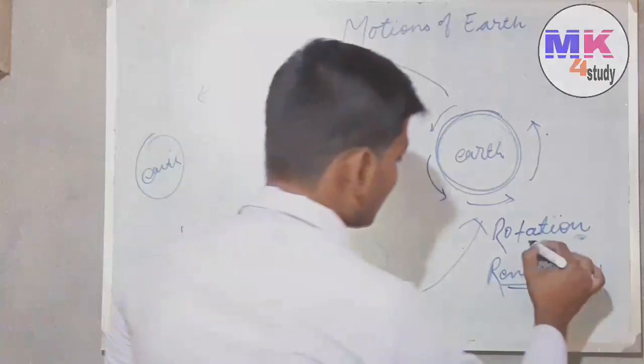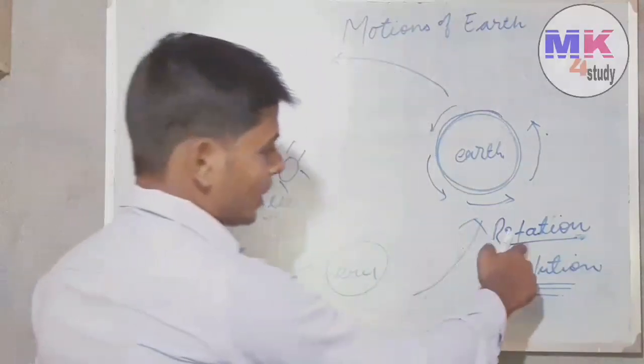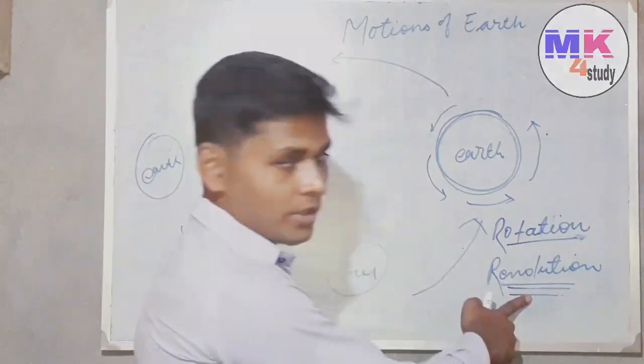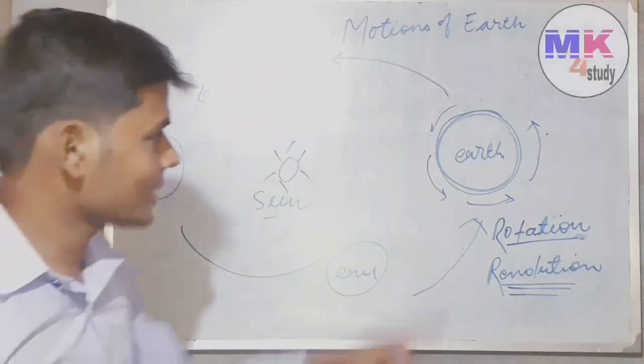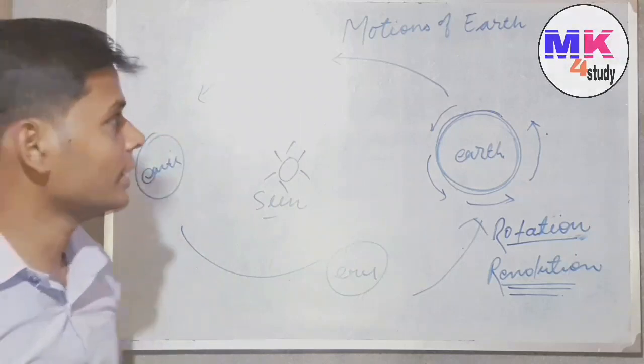So moving in its axis is called rotation, and moving around some another thing is called revolution. Similarly, earth has two movements: first one is rotation and second one is revolution. Due to rotation, day and night occurs, and due to revolution, weather and climates are changed. So these are the two movements, and you have already understood about it.